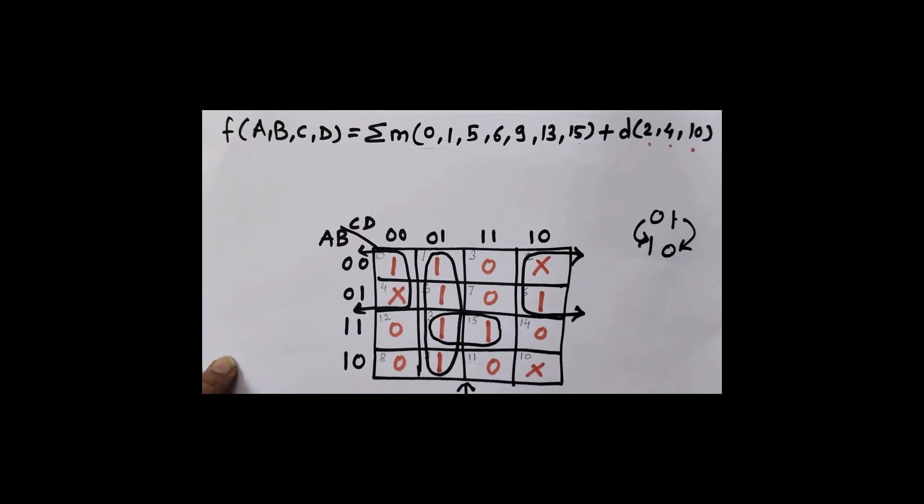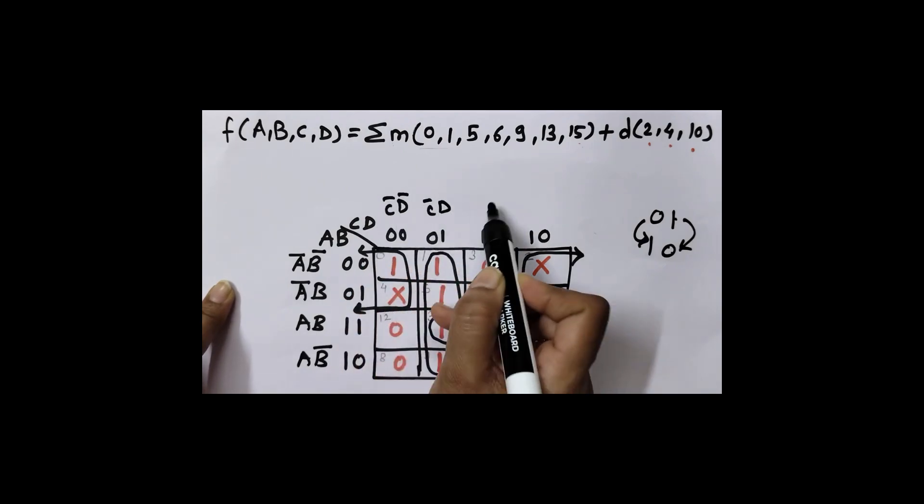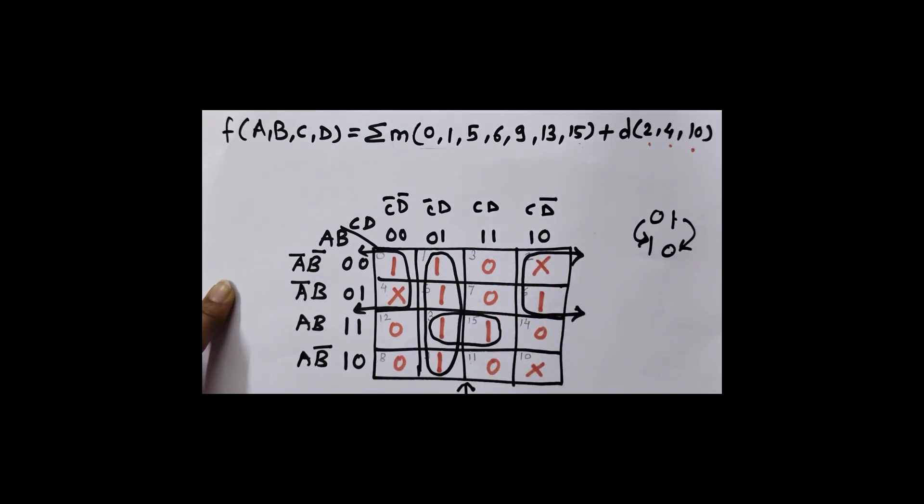Now grouping is over. Next step is we are writing equation in sum of product form. In sum of product form, 1 is important. So wherever value of variable is 1, we will take that variable as it is. But if value of variable is 0, then we will take complement of that variable. Here you can see A is 0 and B is also 0, so I will write A bar, B bar. Here it is A bar, here it is A, B because both are 1, and here A, B bar. Similarly here C bar, D bar, C bar D, C D, C, D bar.